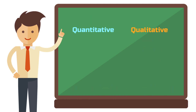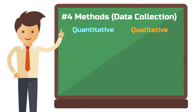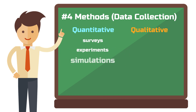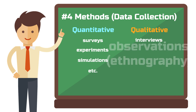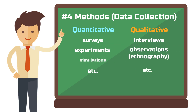Difference 4: the methods. Quantitative research uses methods such as surveys, experiments, or simulations. Qualitative research uses methods such as interviews or observations.